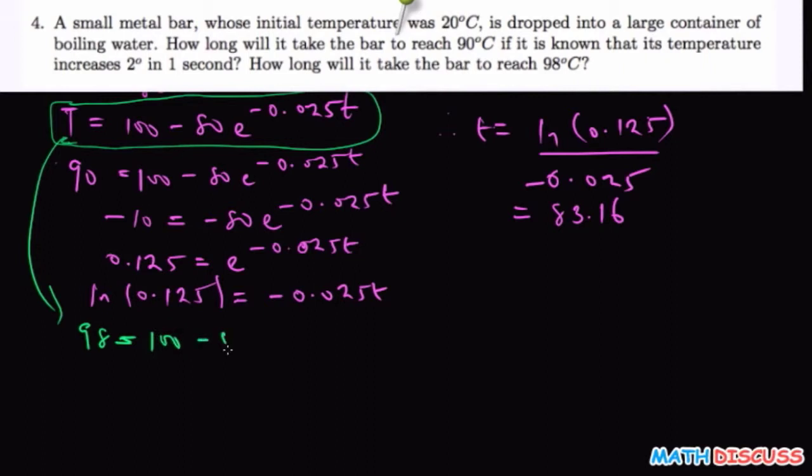minus 80 e to the power negative 0.025t. So we want to find t. We have 98 minus 100 which is negative 2